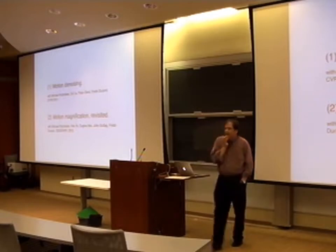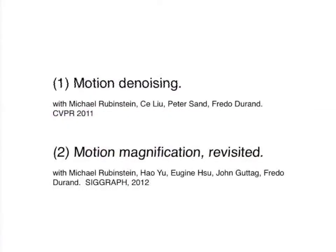There are two pieces. One we call motion denoising, and the other we call motion magnification. Both were joint work. Motion denoising was with Michael Rubenstein, Salio Piersan, and Fredo Durand — Fredo is a colleague, the others are students or graduates. Motion magnification was with Michael Rubenstein, Hao Yu, Eugene Tsu, John Gutag, and Fredo Durand.